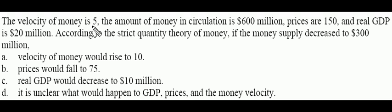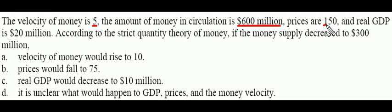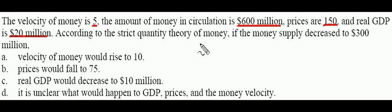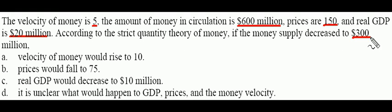If the velocity of money is 5, the amount of money in circulation is $600 million, prices are $150 million, and real GDP is $20 million, according to the strict quantity theory of money, if the money supply decreased to $300 million, which of the following would hold true?